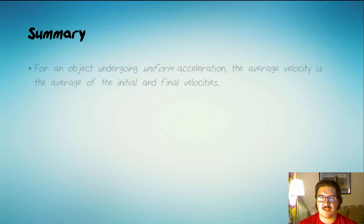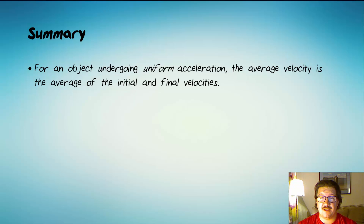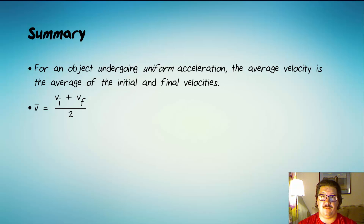To summarize: for an object undergoing uniform acceleration, the average velocity is just the average of the initial and final velocities. Written out as an equation, v̄ = (vi + vf) / 2.